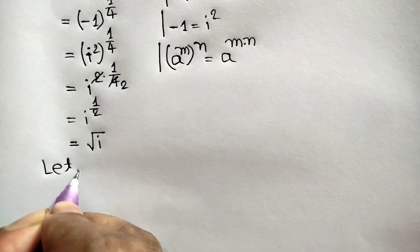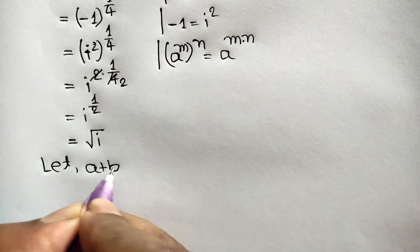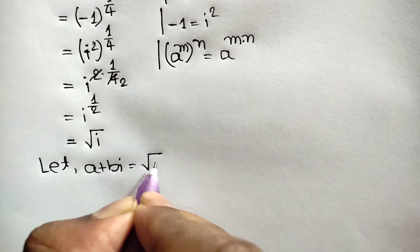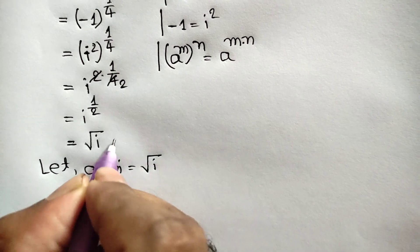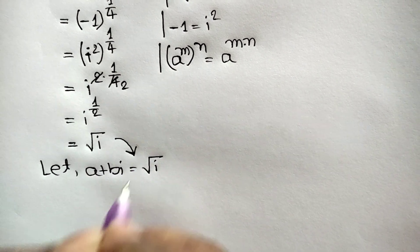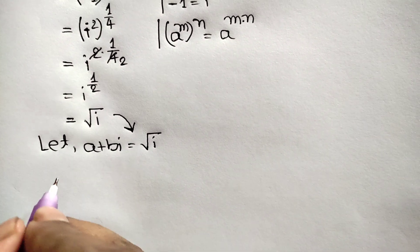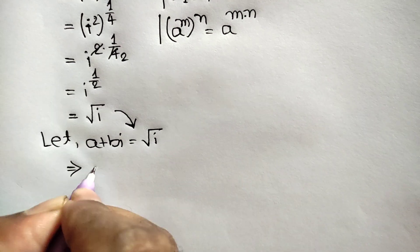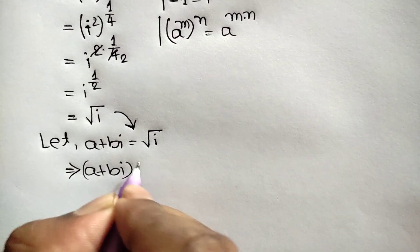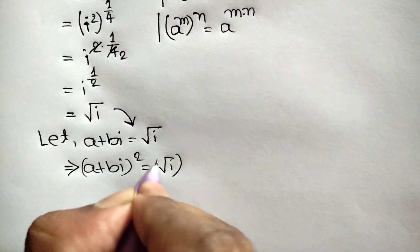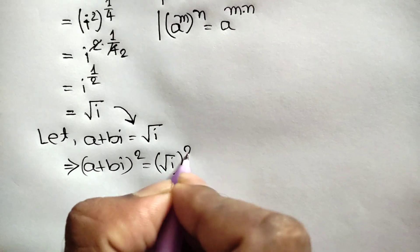Let a plus bi equal the square root of i. Now squaring both sides, we can write a plus bi whole squared is equal to the square root of i whole squared.